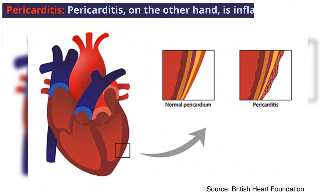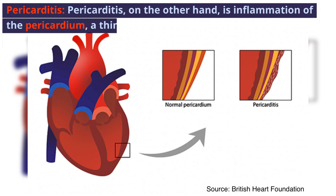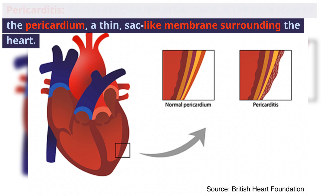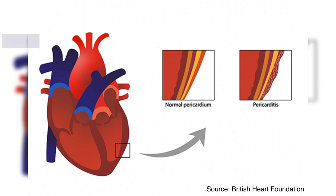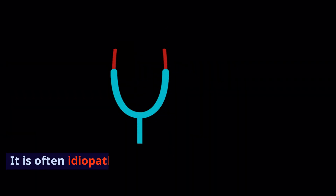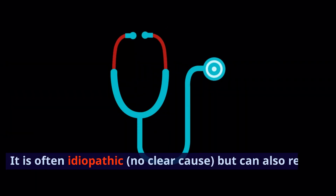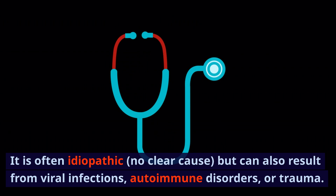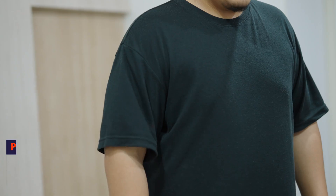Let's now move on to pericarditis. Pericarditis, on the other hand, is inflammation of the pericardium, a thin sac-like membrane surrounding the heart. It is often idiopathic, which means no clear cause, but can also result from viral infections, autoimmune disorders or trauma.